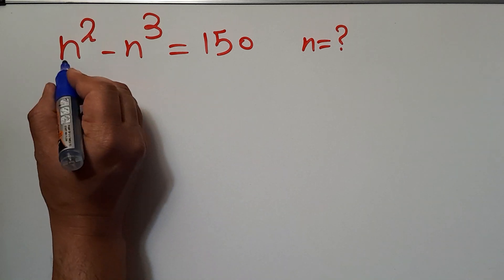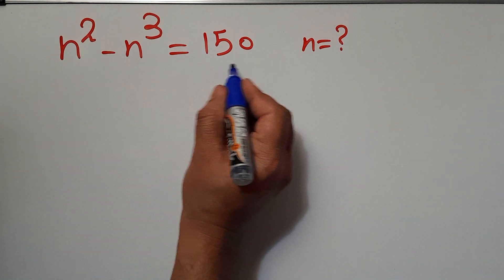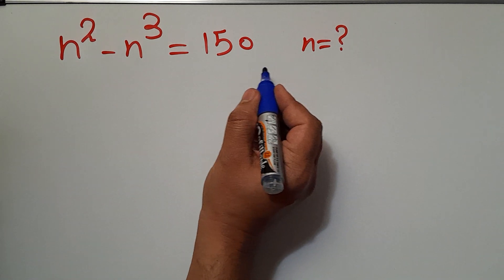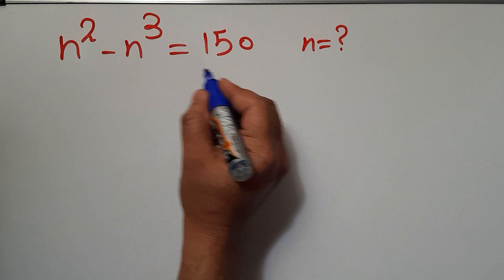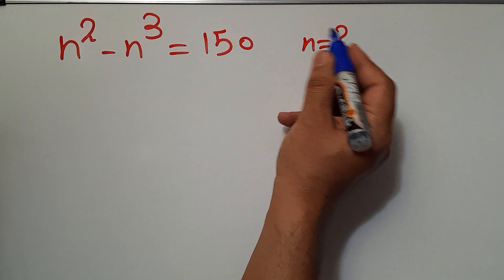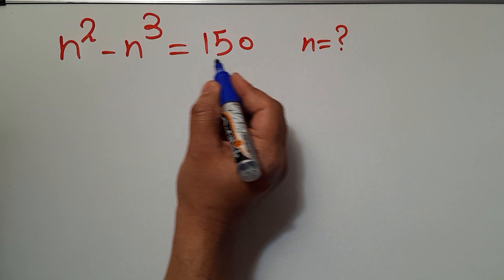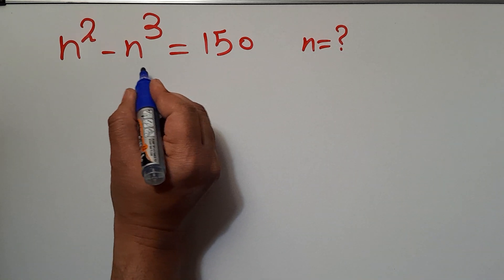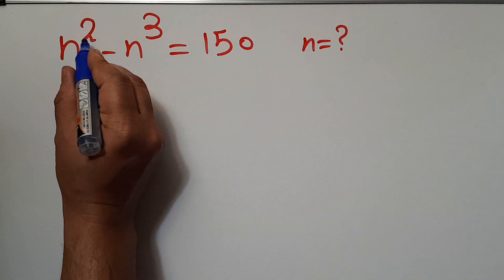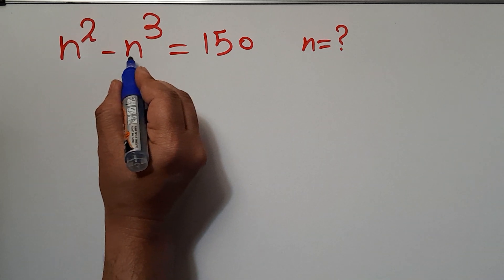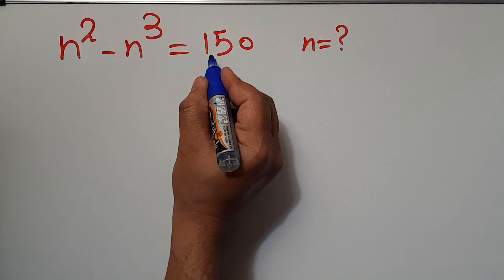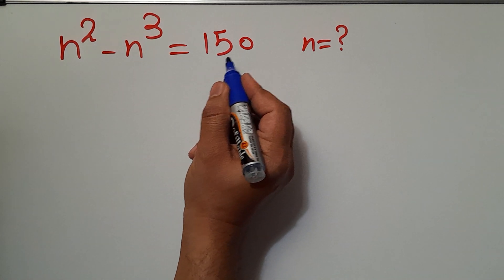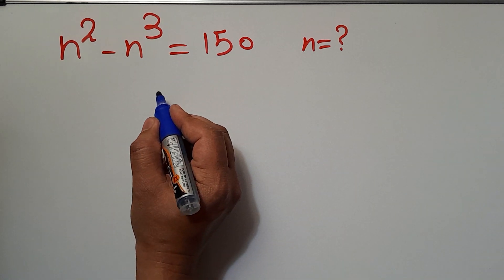Hi everyone. Here we have a nice math problem. From this equation we want to find the value of n. Our equation is n squared minus n cubed equals 150. Are you ready to solve? Let's go ahead and get started.